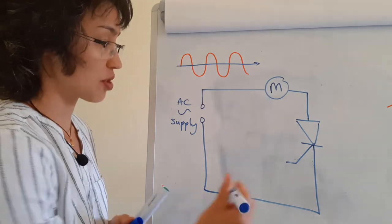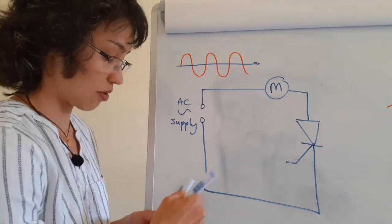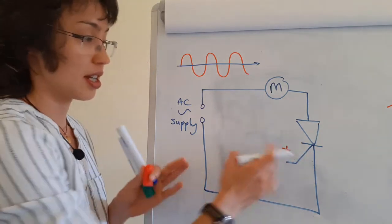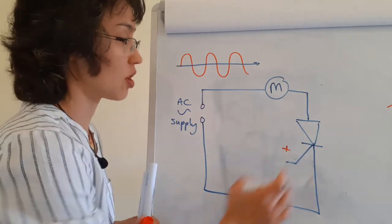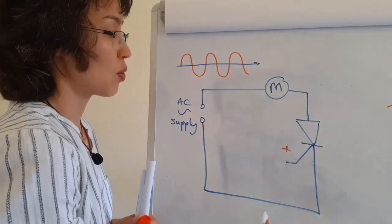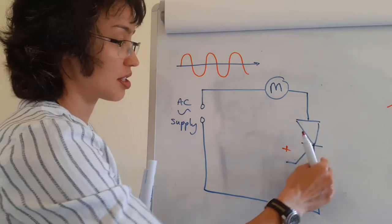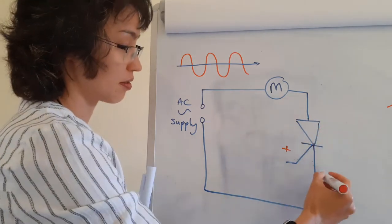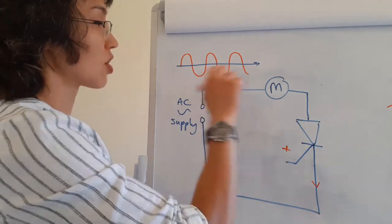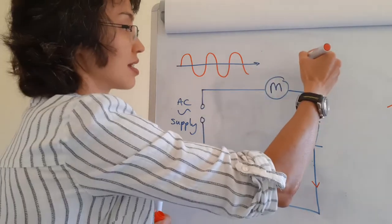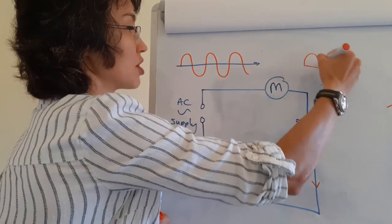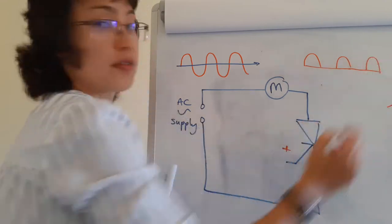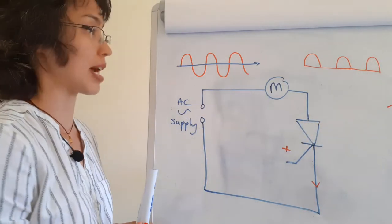Now, if I turned my gate on all of the time — so my gate is switched on, my device is switched on — don't forget that this device only allows current to flow one way. So the current will flow this way. So it would act in this case as a rectifier, and I would just get half of the AC waveform coming out.